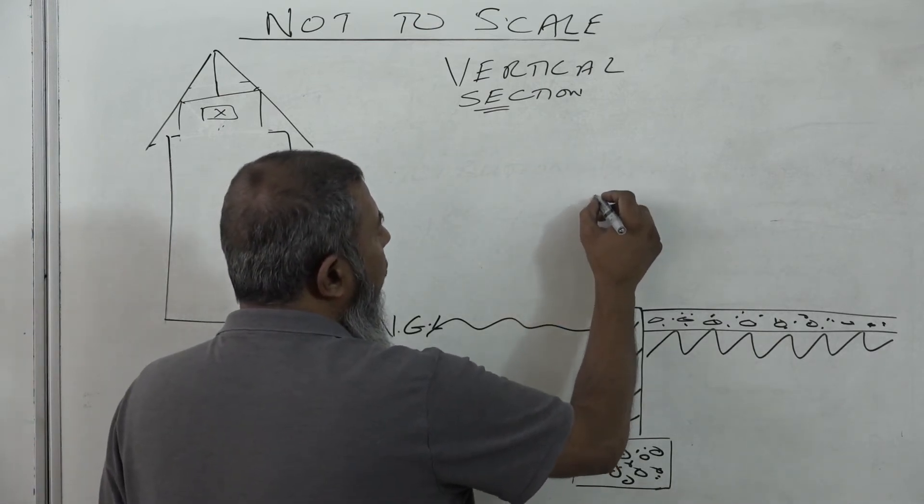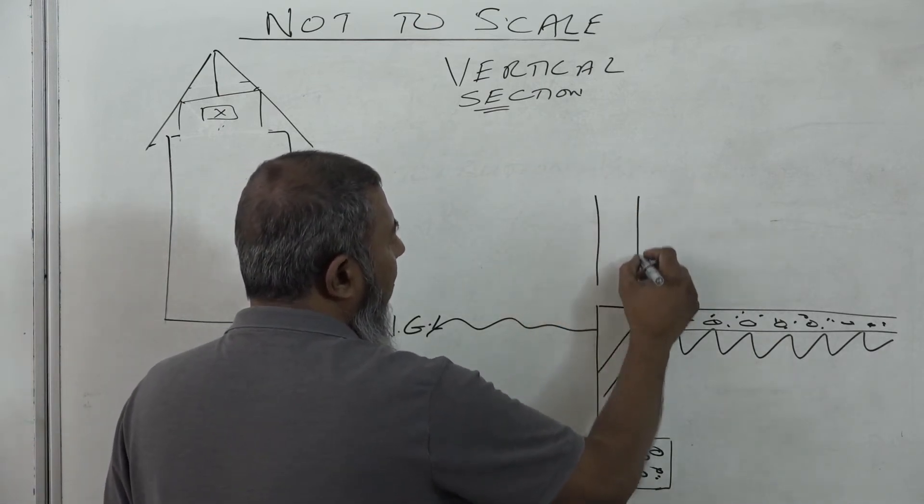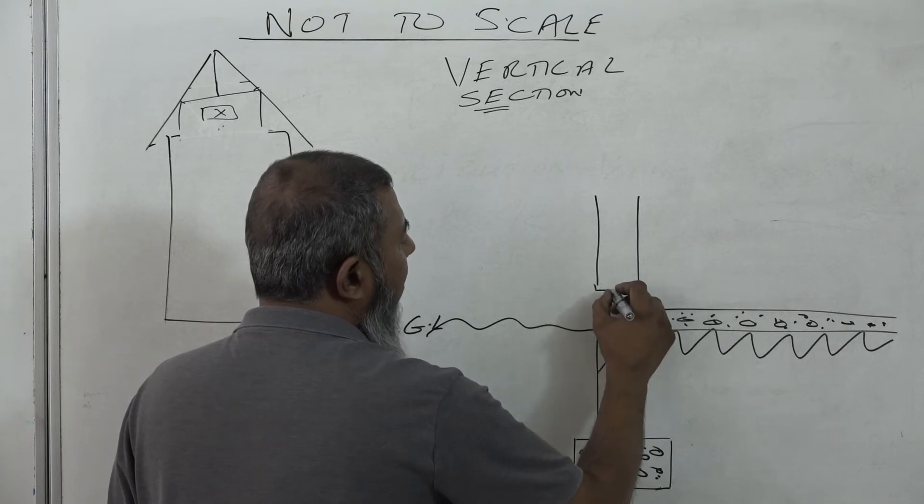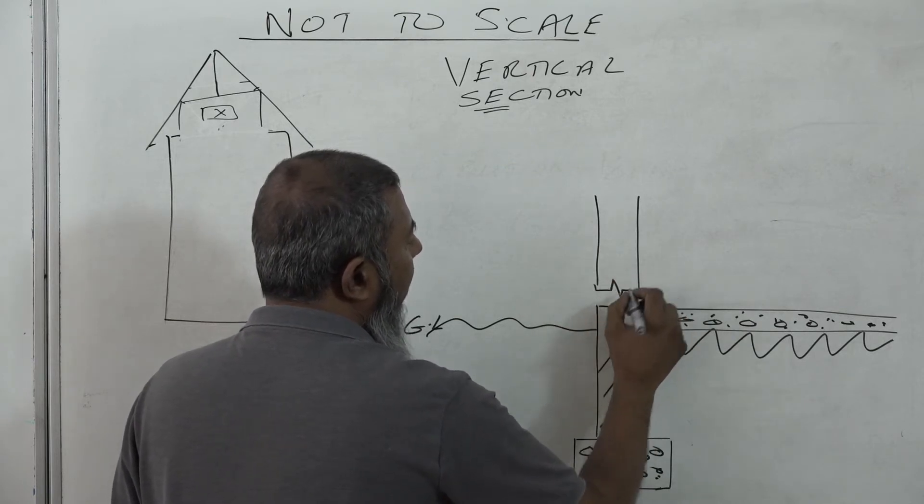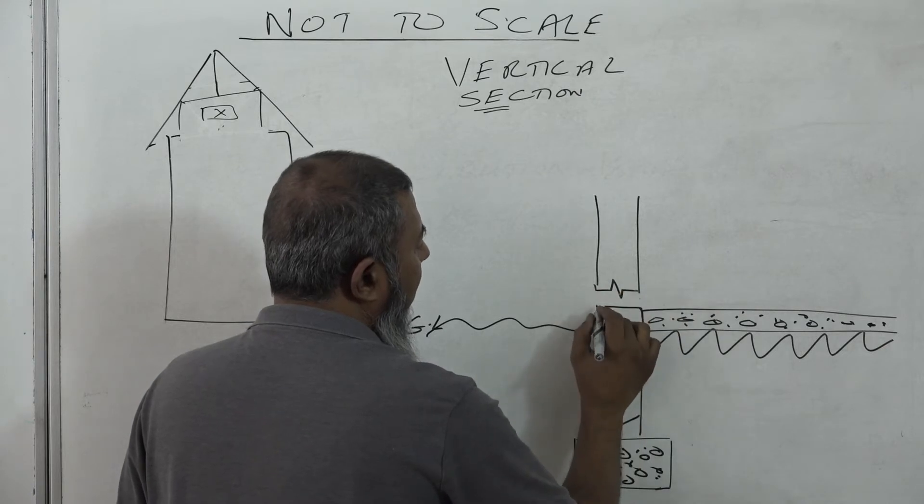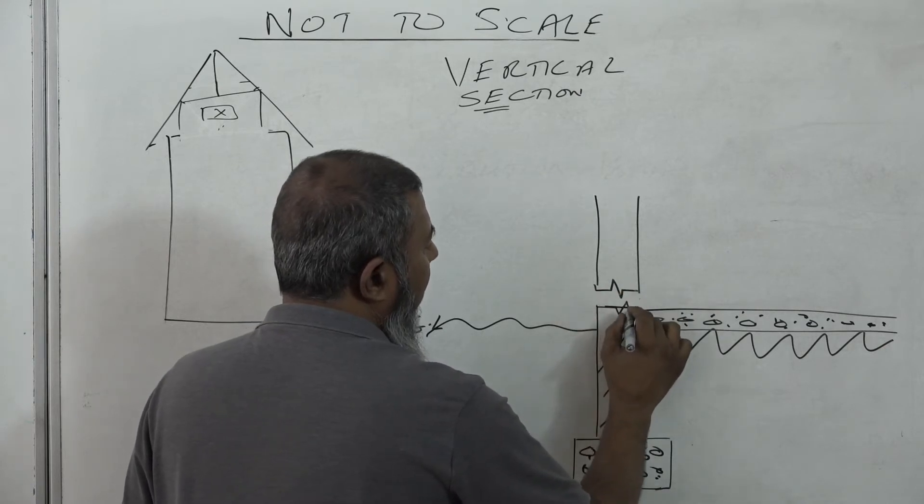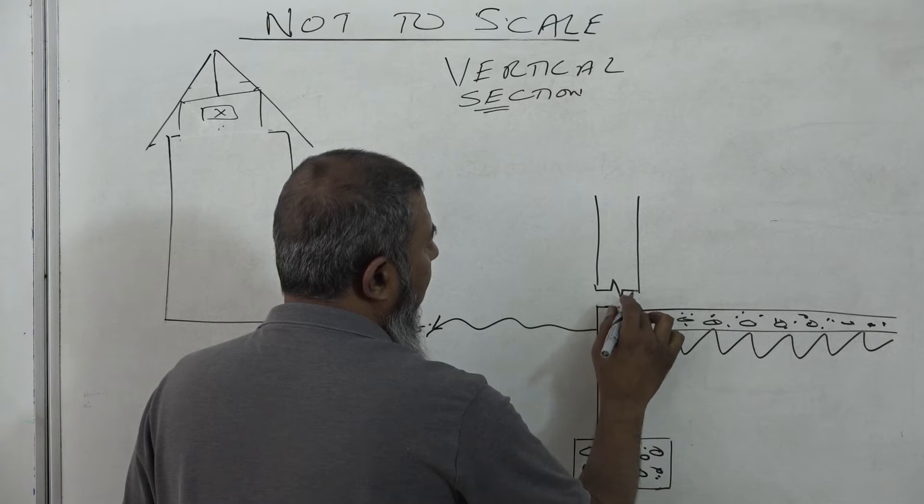We have our NGL, natural ground level. We have our hard core. We have our concrete floor, which is now inside the building. Now remember, we're doing this to scale, but obviously we cannot draw scale on our board.